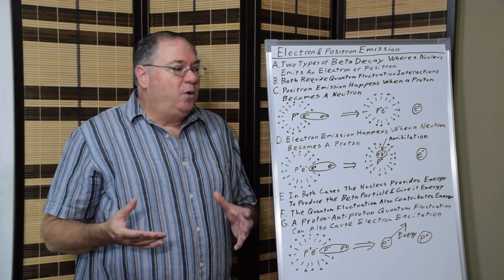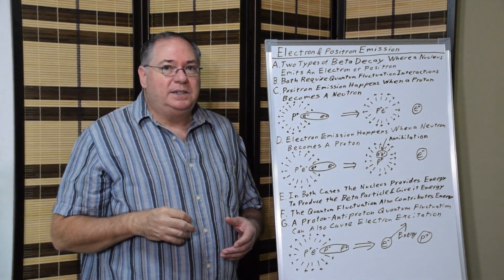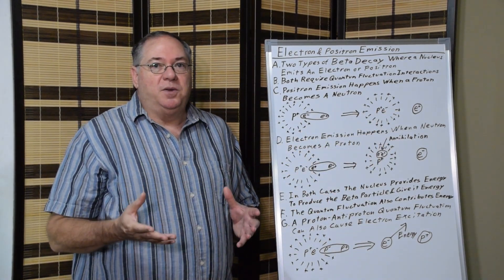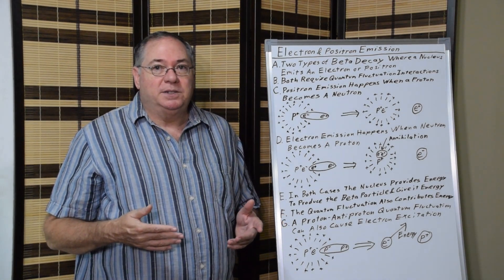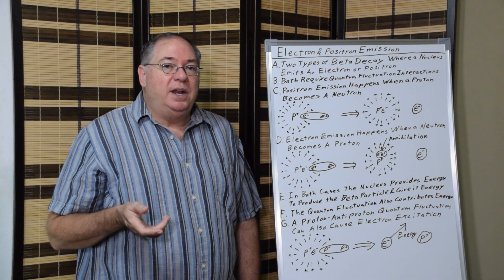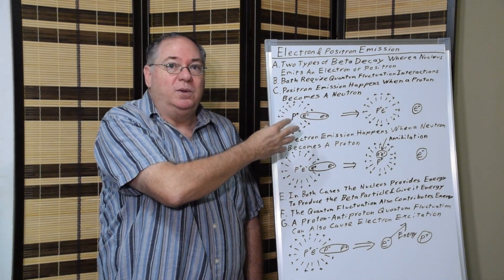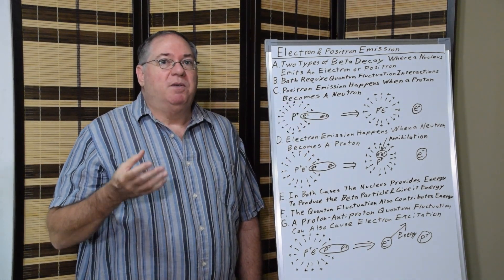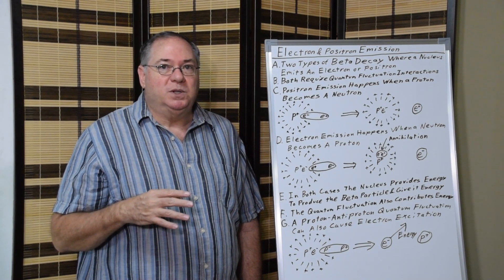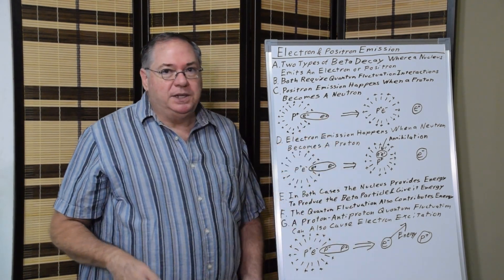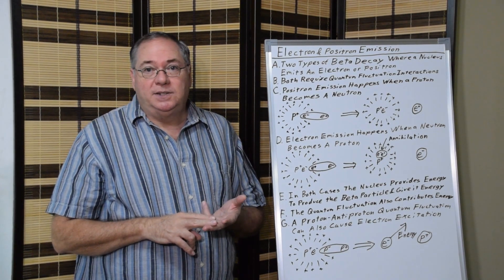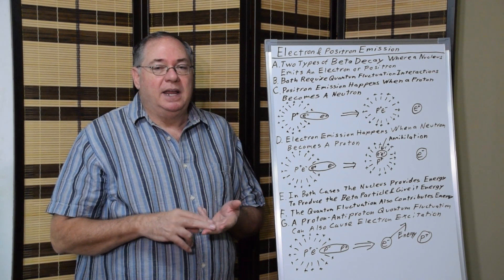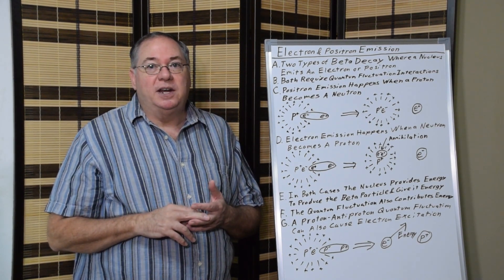In a normal free proton case, the positron would have to annihilate immediately with an electron, because there isn't enough energy for the positron to become free. But when we're looking at nuclear decay, the nucleus as a whole has excess energy. The positron emission process reduces the energy, making the nucleus more stable. And that excess energy goes into making the positron stable, because that requires 511 keV, and it also gives the positron its kinetic energy.